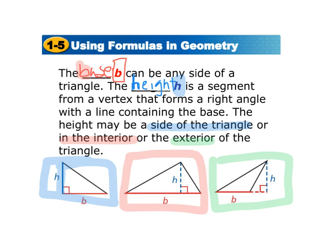In the first triangle, we have the height and the base forming a right angle as a side. In the second, we have to drop the height down from the vertex to form a right angle with the base on the interior. In the third, we have to drop the height from the outside to form a right angle with the base on the exterior.